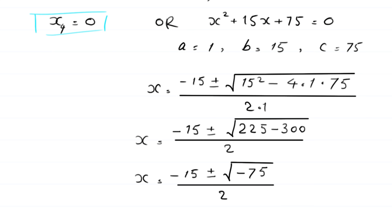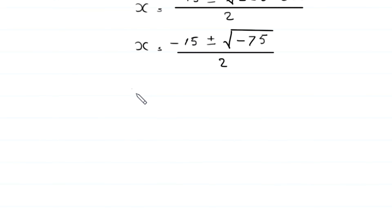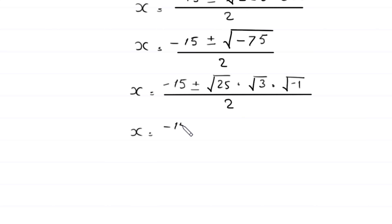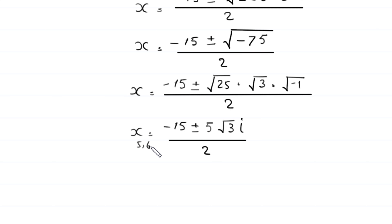The square root of negative 75 can be written as 5√3 · i, so x equals (−15 ± 5i√3) / 2. These are the fifth and sixth values of x. So these are the six solutions of this equation.